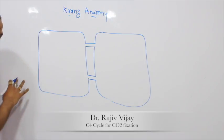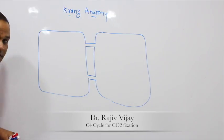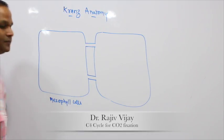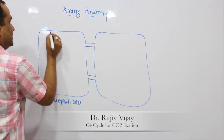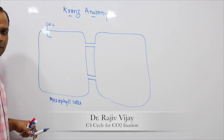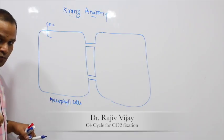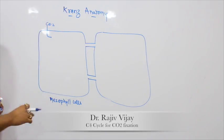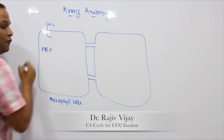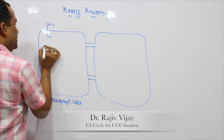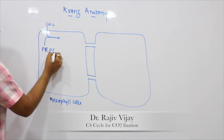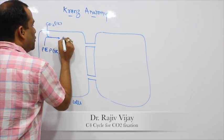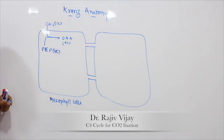The first CO2 fixation occurs in plant cells. The primary acceptor of carbon dioxide is PEP — Phosphoenolpyruvate. PEP is a 3-carbon compound, and when it fixes CO2, that one carbon is added, converting PEP into a 4-carbon compound called OAA — Oxaloacetate.